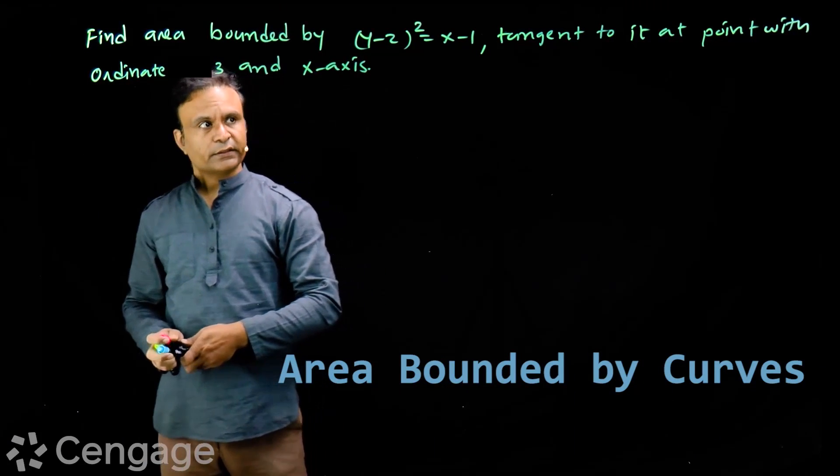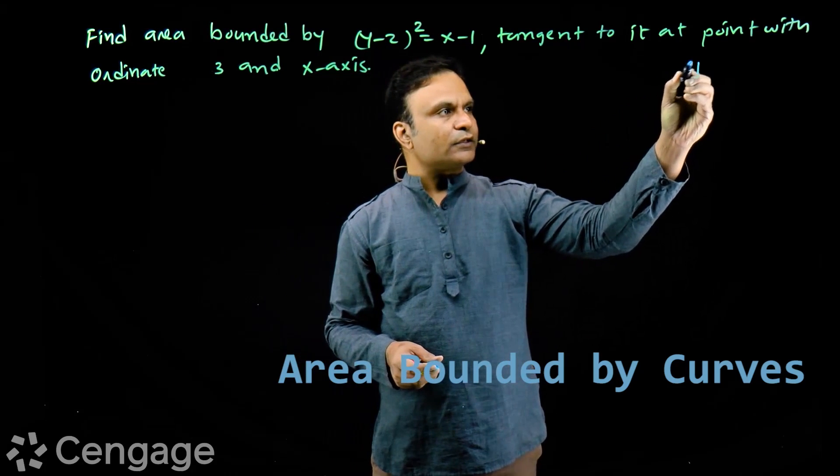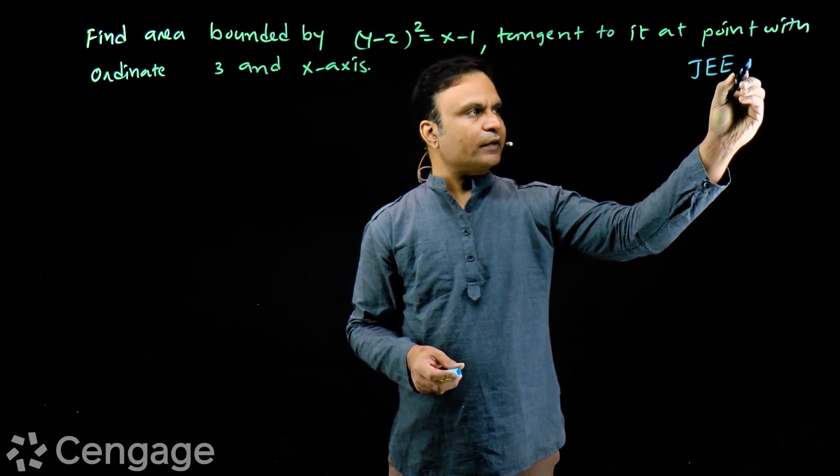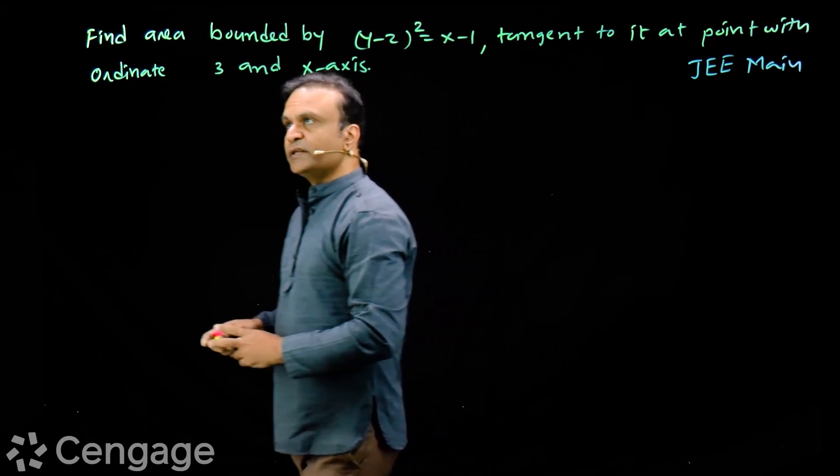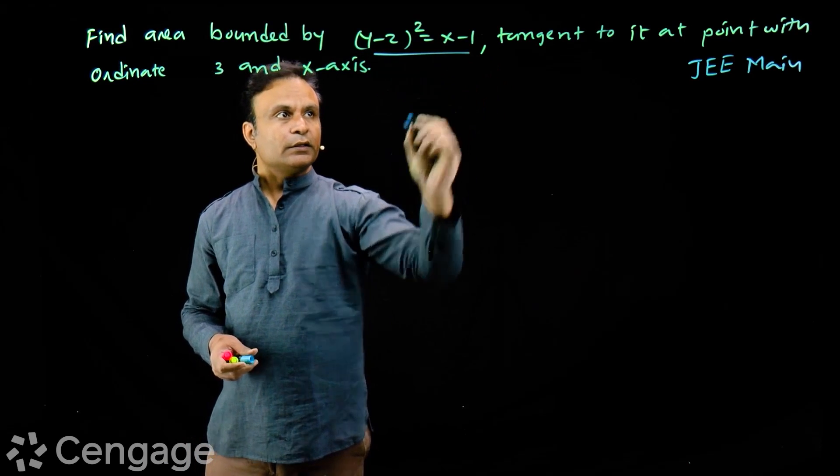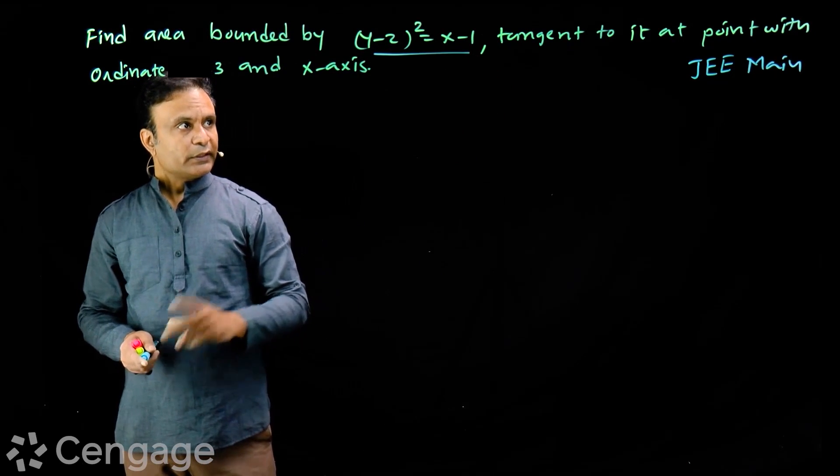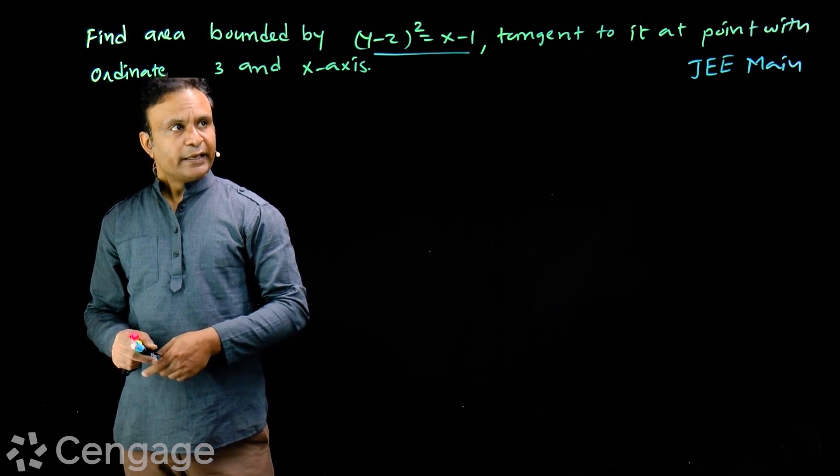Let's try this question, which is the main question, the JEE Main question. The question is: find area bounded by parabola (y-2)² = x-1, tangent to it at point with ordinate 3, and x-axis.